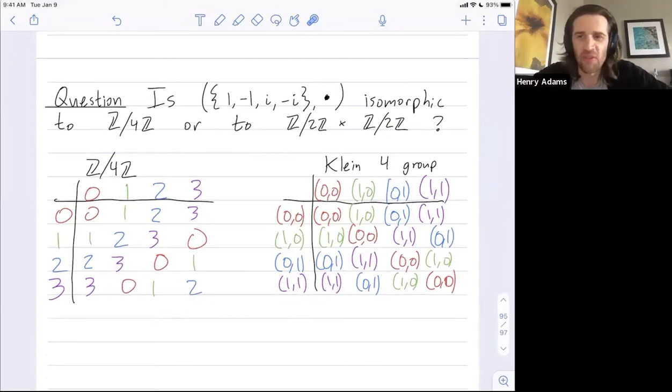Welcome folks. We haven't defined isomorphisms yet, but we've started to see a little bit about what they mean. Two groups are isomorphic if they have the same structure, up to relabeling the names of the elements. And when you look at groups of size 4, there's really only two different isomorphism classes.